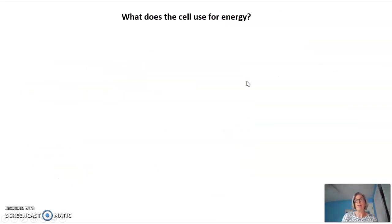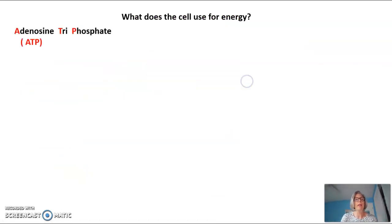So what do cells use for energy? What's their currency? It's a molecule called adenosine triphosphate, or ATP for short.